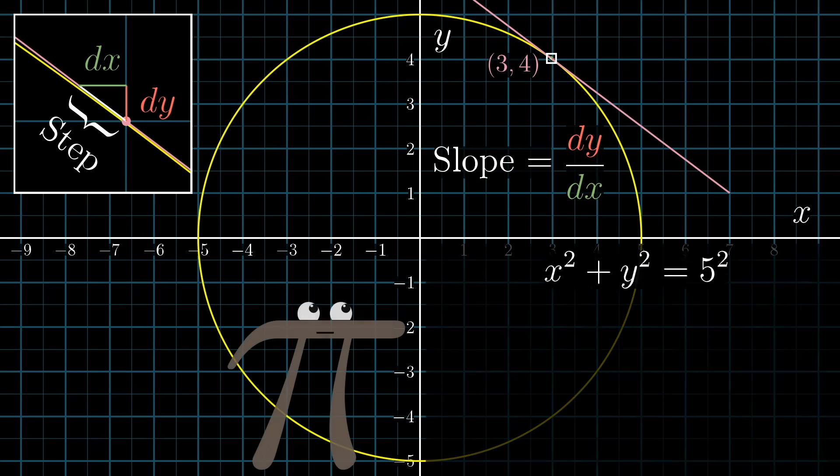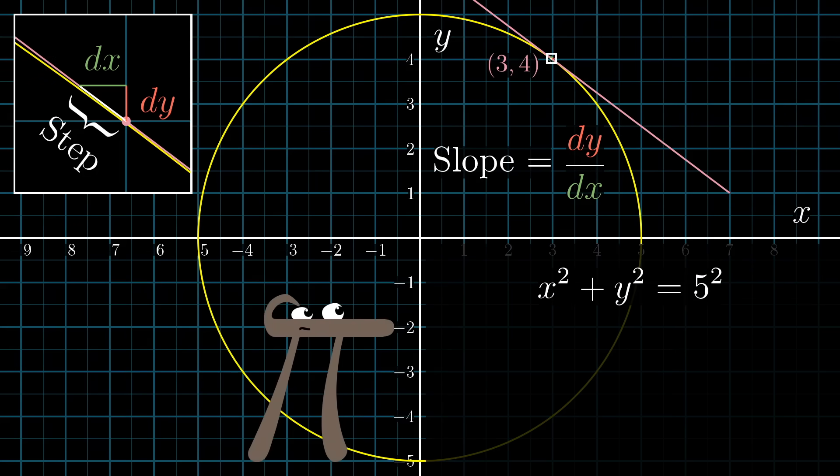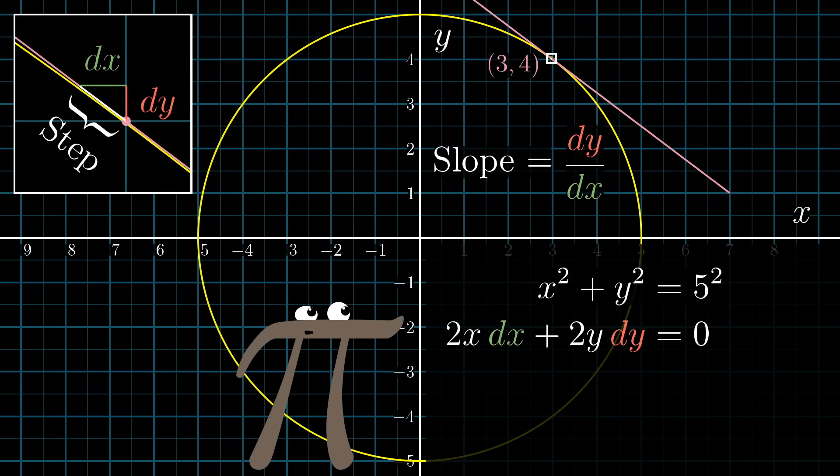The procedure for how you actually find dy/dx for curves like this is the thing that I found very weird as a calculus student. You take the derivative of both sides like this. For x² you write 2x times dx, and similarly y² becomes 2y times dy, and then the derivative of that constant 5² on the right is just zero. Now you can see why this feels a little strange, right? What does it mean to take the derivative of an expression that has multiple variables in it? And why is it that we're tacking on the little dy and the little dx in this way?